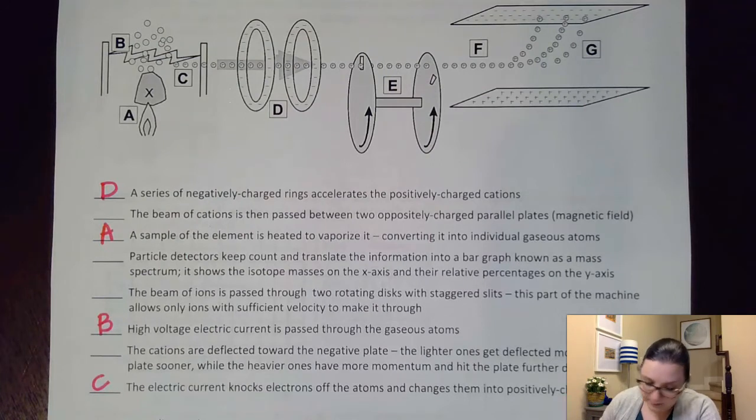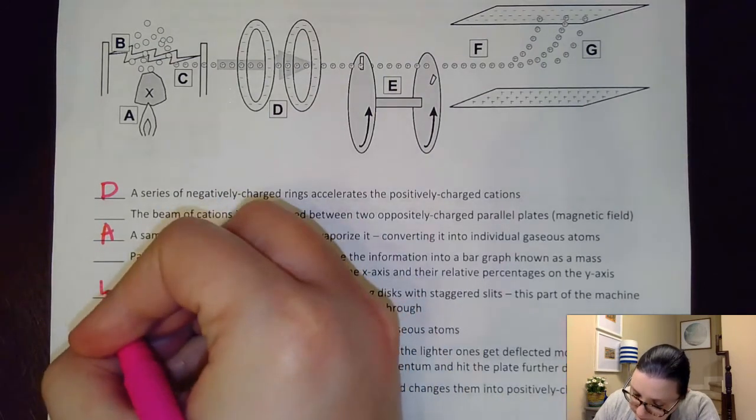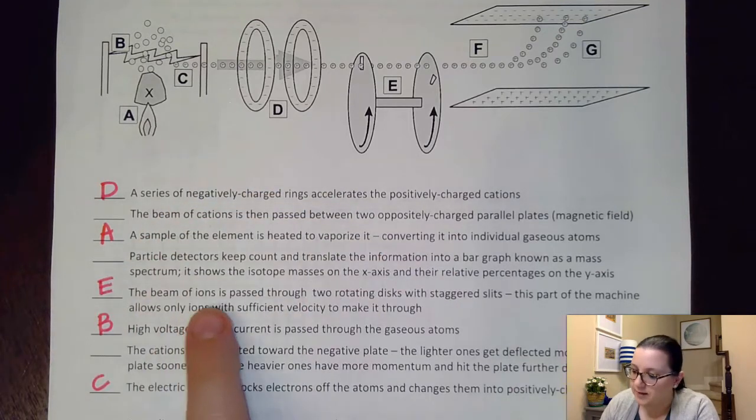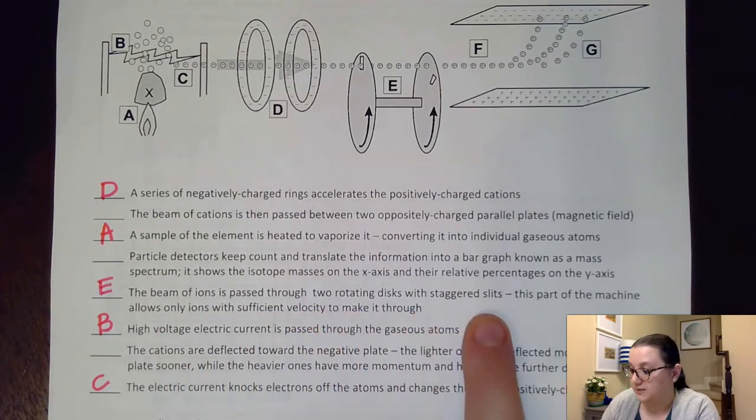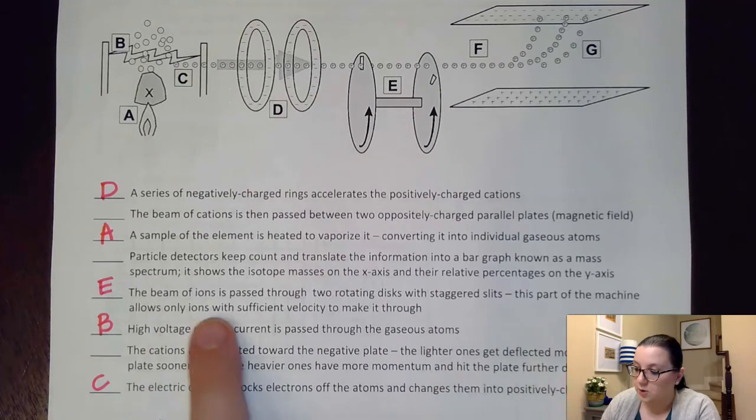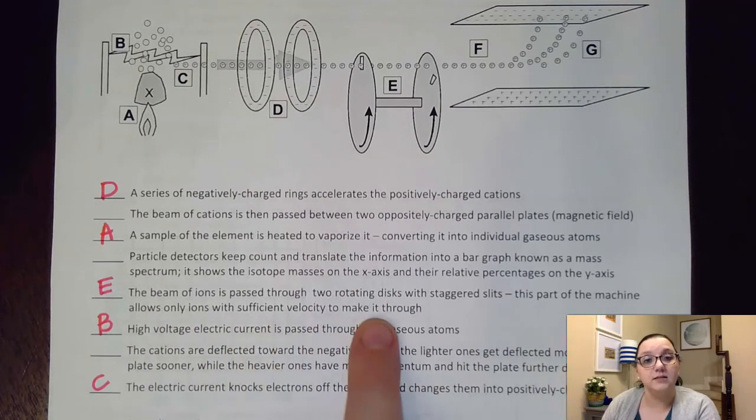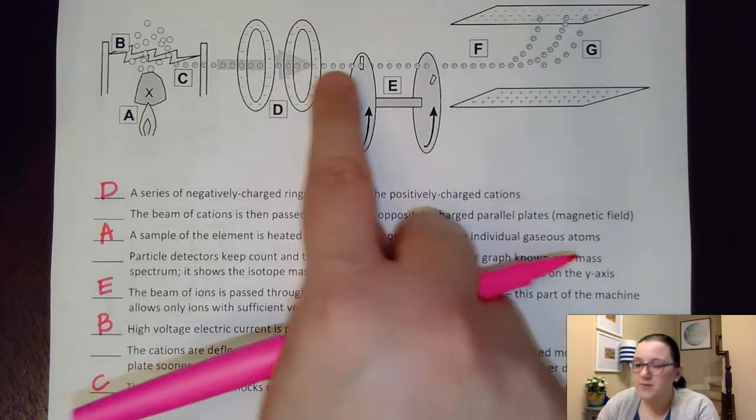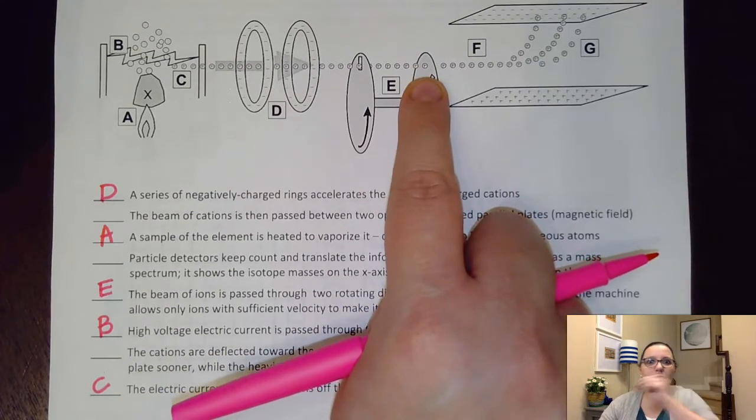The next step is this guy. The beam of ions is then passed through two rotating disks with staggered slits. This part of the machine allows only ions with sufficient velocity to make it through.